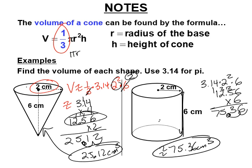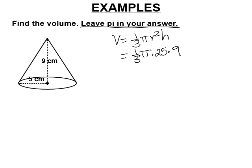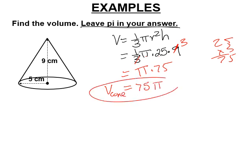Memorize this: for a cylinder it's pi r squared h; the area of the base is pi r squared, and for a cylinder you multiply by h. For a cone you multiply by one third. For problems where we leave pi in the answer, it equals one third times pi times r squared times h. With radius 5 and height 9: one third times pi times 25 times 9 — the 3 and 9 cancel — giving 75 pi cubic units.